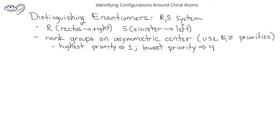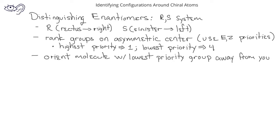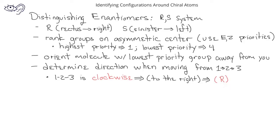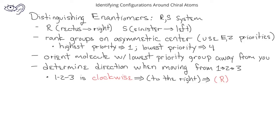Once we've ranked the groups on the asymmetric center, we want to orient the molecule so that the lowest priority group, the number 4 priority, is pointing away from you. Once you've done this, if you go from 1 to 2 to 3 in a clockwise direction, or to the right, we would indicate that is the R enantiomer. However, if going from 1 to 2 to 3 is in a counterclockwise direction, or to the left, we would indicate that this is the S enantiomer.